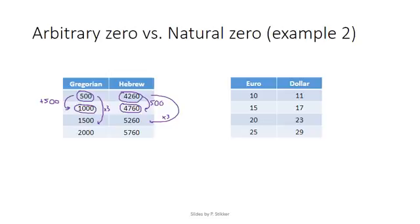If we look at the euro versus dollar, then depending on the date, the conversion might be slightly different by now. But if we look here, the difference between 10 and 15 euros is 5. So that's a 5 difference. And here we have the difference between 11 and 17. That's 6. And if we move another 5, then here we should be moving another 6. And indeed 17 plus 6 equals 23.